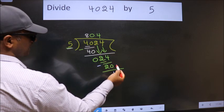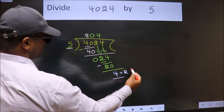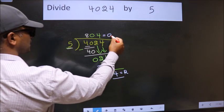No more numbers to bring down. So we stop here. This is our remainder. This is our quotient.